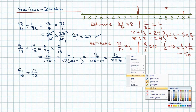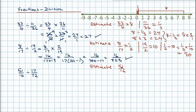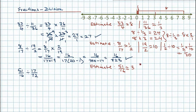I'm going to estimate what my answer should be. 51 sixteenths — 3 times 16 is 48, which is close enough to 51. So 51 sixteenths is approximately equal to 3. It's a little bit more than 3, but to keep the numbers simple I'm saying it's approximately 3.